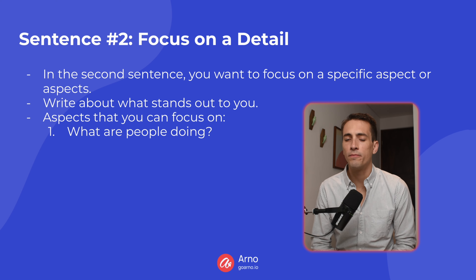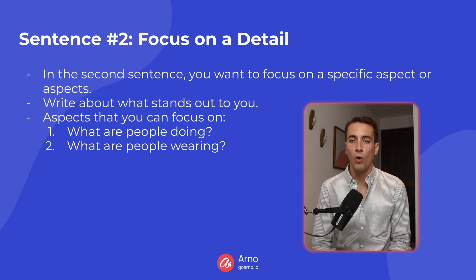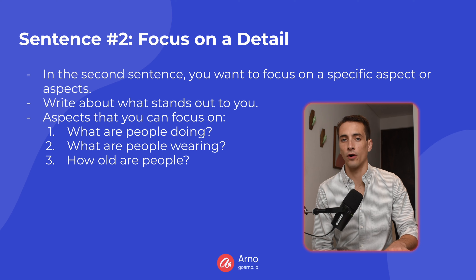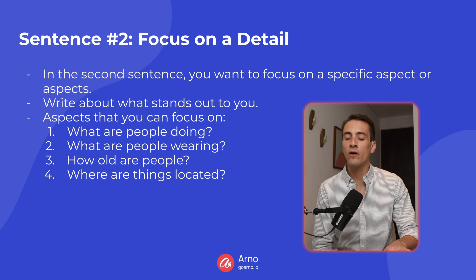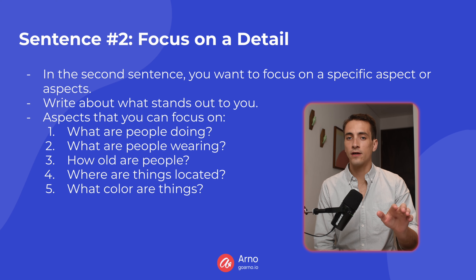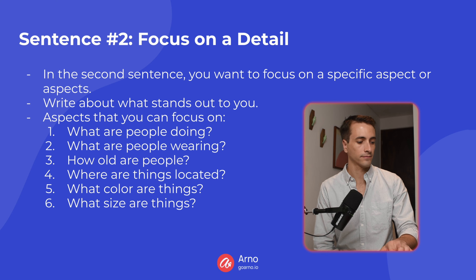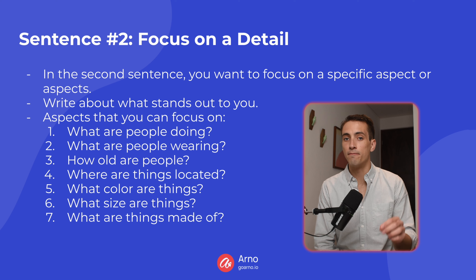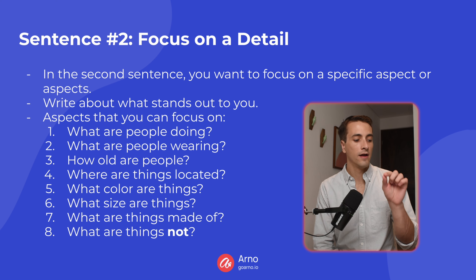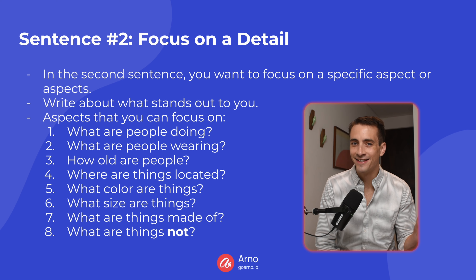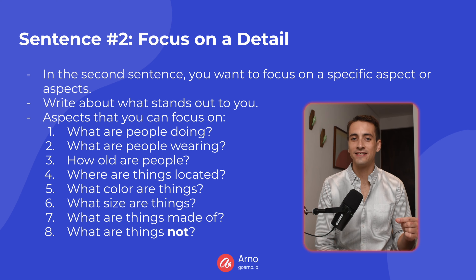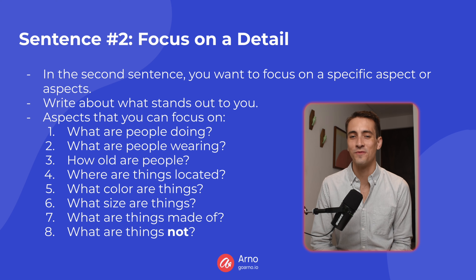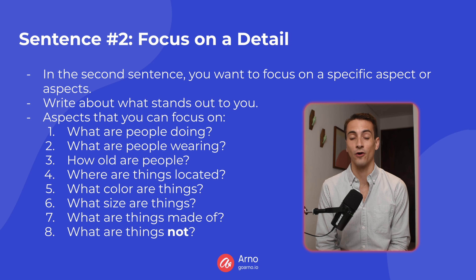Here are questions that you can use to help you identify details that you can describe: What are people doing? What are people wearing? How old are people? Where are things located? What color are things? What size are things? What are things made of? What are things not? So you can always say that something is not something else — that is a way to describe something that can be quite useful. I'll show you an example of that later on.